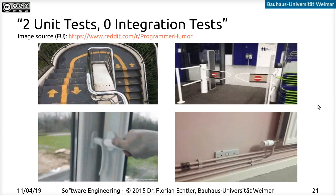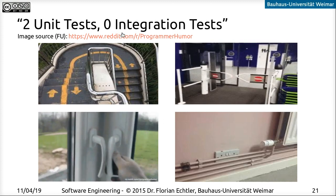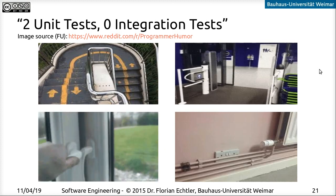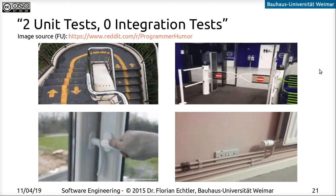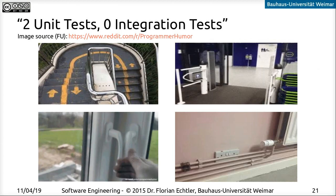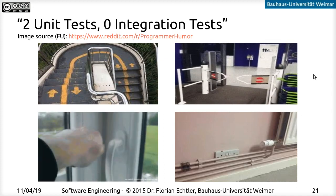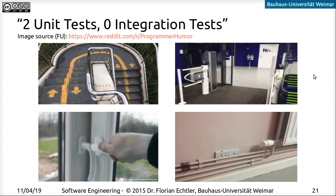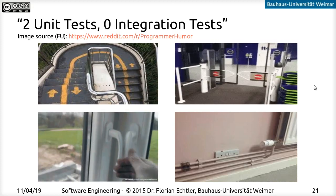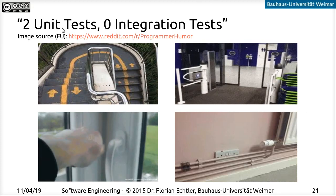There's actually a meme called 'two unit tests and zero integration tests' — I'll leave that here for you to have a look at. These are real-world examples of things that obviously work on their own but do not work in conjunction with each other. Everybody tested each individual thing on its own but not the combination, and there are quite a few more examples like this if you search for that term.